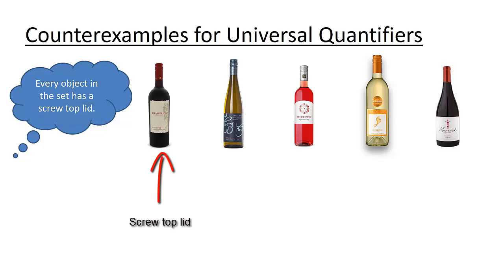What we could do is go through each wine one by one until we found a bottle that didn't have a screw top lid. A wine without a screw top lid would be our counterexample. Now it might be difficult to see here, but the last bottle has a cork instead of a screw top lid, so the last wine bottle is the counterexample for this statement.